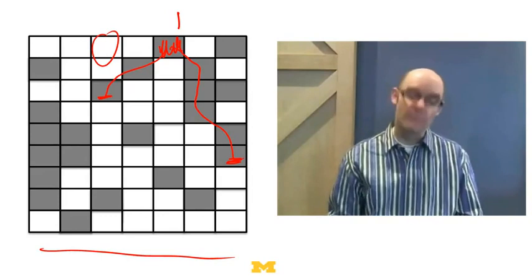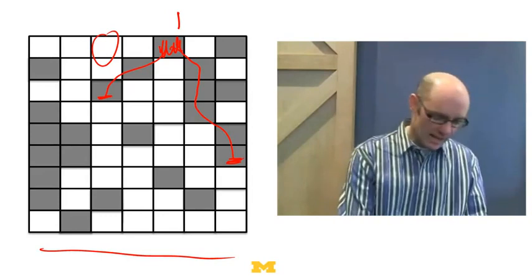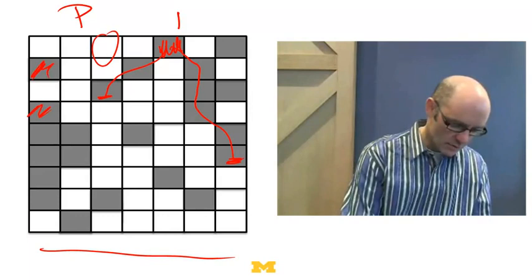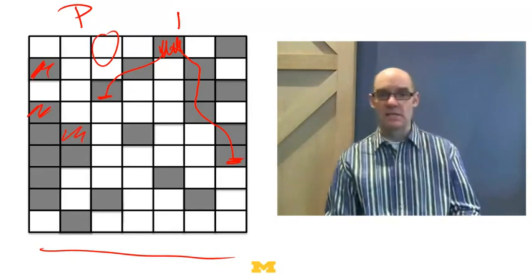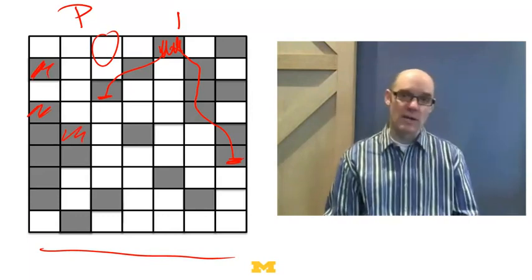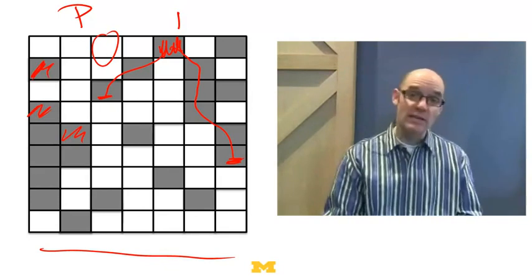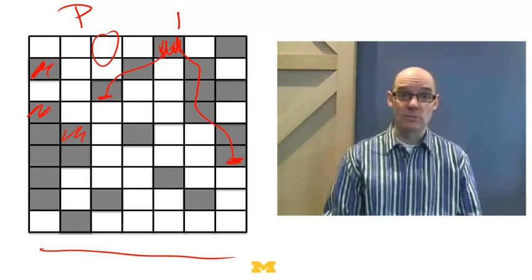So here's the model, really simple model. Let P equal the probability that I fill in a square. So for each square, I flip a coin, and if P's a half, then half the time I fill in a square, half the time I don't. If it's a third, a third of the time I fill in a square, and two thirds of the time I don't. And then we ask, does it percolate? It's a really simple question.